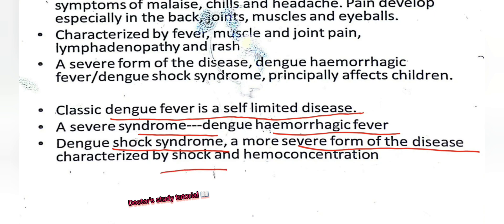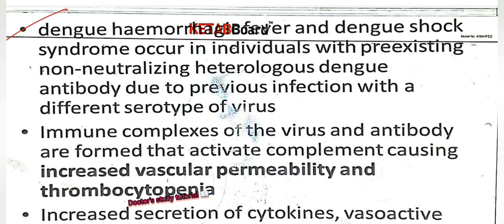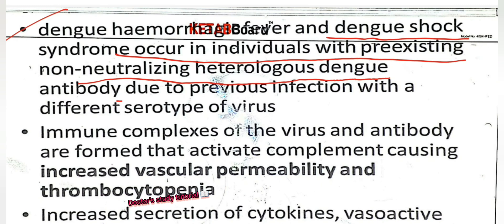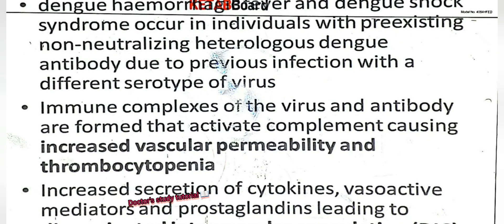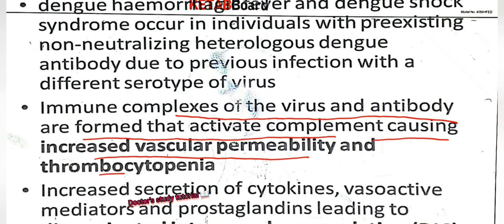These two topics are very important for our viva — dengue hemorrhagic fever and dengue shock syndrome. Dengue hemorrhagic fever and dengue shock syndrome occur in individuals with pre-existing non-neutralizing heterologous dengue antibody due to previous infection with a different serotype. Virus-antibody immune complexes are formed that activate complement, causing increased vascular permeability and thrombocytopathy.